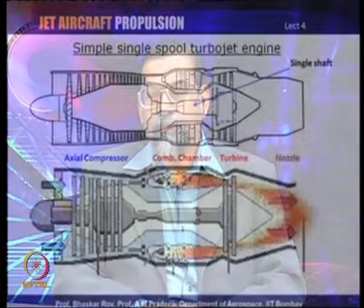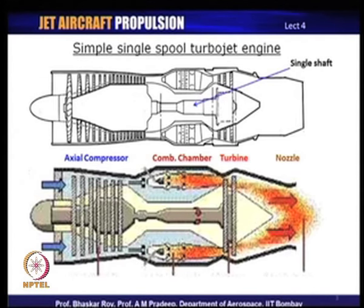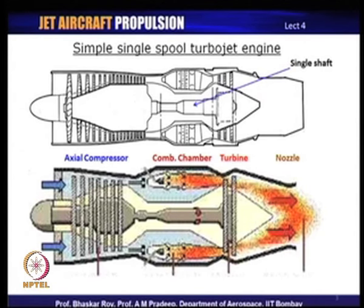A basic jet engine is composed of a number of components. If we look at a basic jet engine, we shall see that it has compressors — in this particular diagram you see an axial compressor. We will see in the next picture a diagram of a centrifugal compressor followed by an axial compressor. There is a combustion chamber, then a turbine, and then the flow exits through the nozzle. Each of these components has a function, thermodynamically laid out in a cycle, and each component performs a certain thermodynamic function.